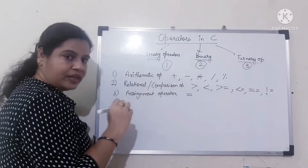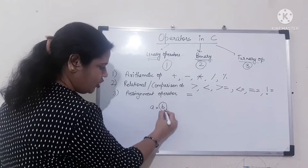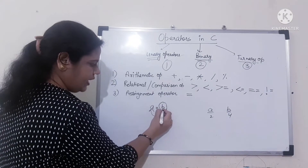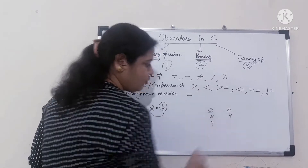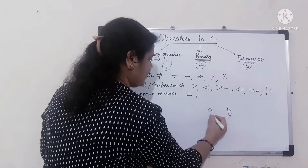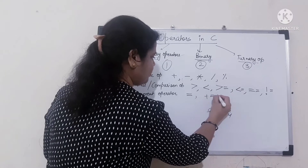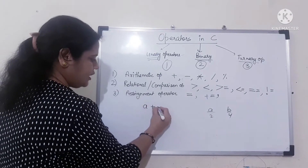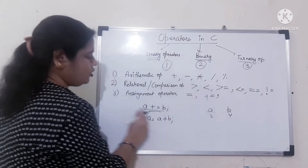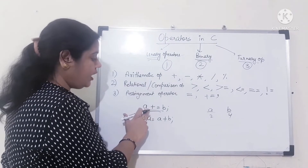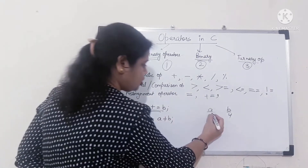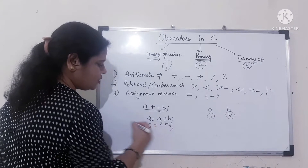Next are assignment operators. Equal to: if I say A equal to B, it means the value of B will be copied into A. If A is 2 and B is 4, after A equals B, the latest value of A will be 4. This is the assignment operator. Plus equal to — A plus equal to B — is equivalent to A equals A plus B. Whatever value A has, we add B to it and assign the result back to A. Like 2 plus 4 equals 6.